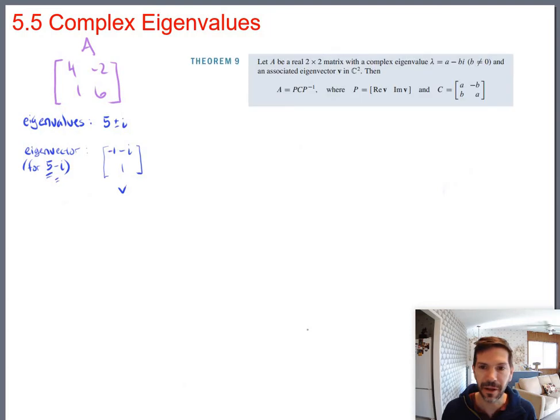So let's take a look at Theorem 9 from the book. Which says, let A be some 2x2 matrix with real entries. So the original entries in the matrix, not complex numbers. Real 2x2 matrix. But it does have complex eigenvalues. In particular, they're focusing on the A minus B i one, which is what I did here as well. 5 minus 1 i. And an associated eigenvector V. So there's my V.